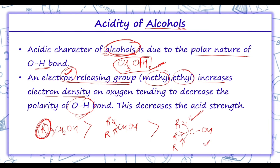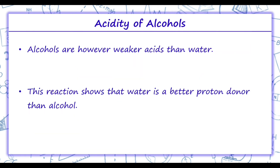Thus, tertiary alcohol is the least acidic and primary alcohol is more acidic. Next, alcohols are weaker acids than water. Why do we say alcohols are weaker acids than water?